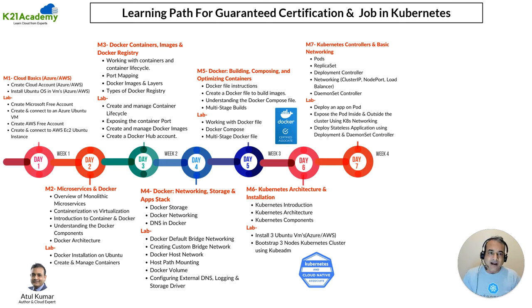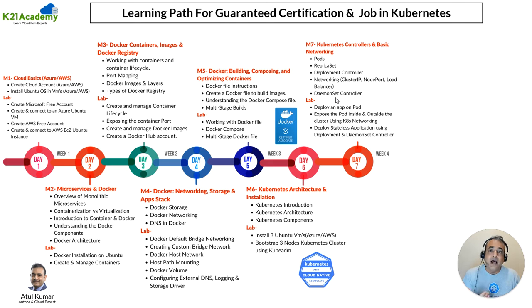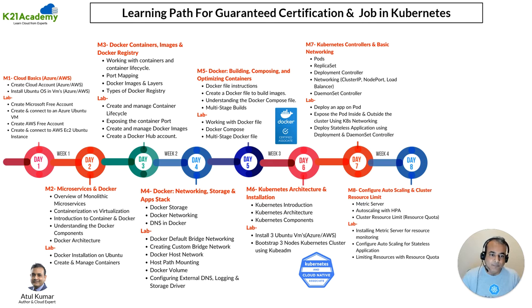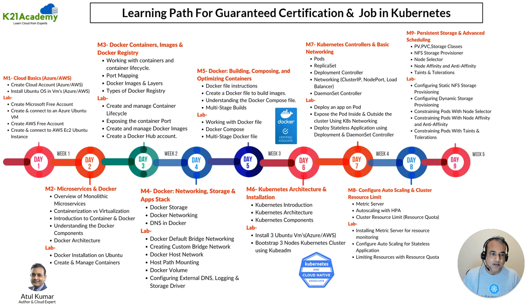We begin with Kubernetes architecture, all networking concepts and various components — pods, replica sets, deployment controllers, network services like ClusterIP, NodePort, load balancers, and DaemonSet controllers. We'll also look at deploying applications and working with networking, autoscaling — both horizontal pod autoscaling (HPA) and vertical pod autoscaling — and how to restrict resources like memory and CPU within Kubernetes.